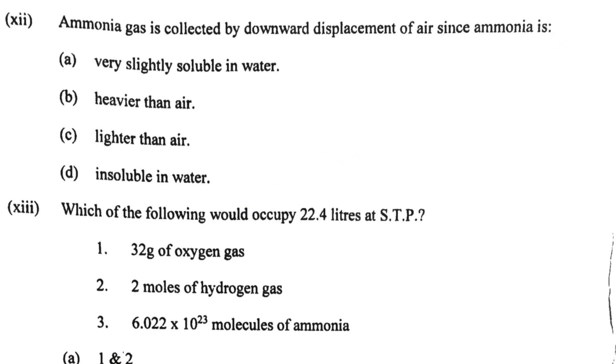Let us come to the twelfth one. Ammonia gas is collected by downward displacement of air because ammonia is lighter than air. Where is it? Here. Okay. So the correct option for the twelfth one is C where we say lighter than air.